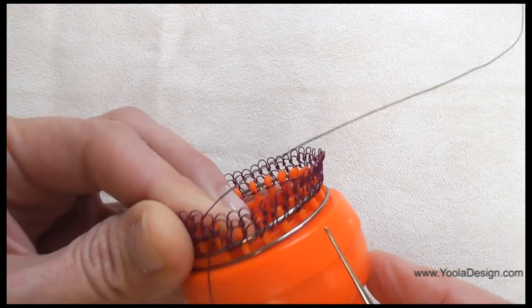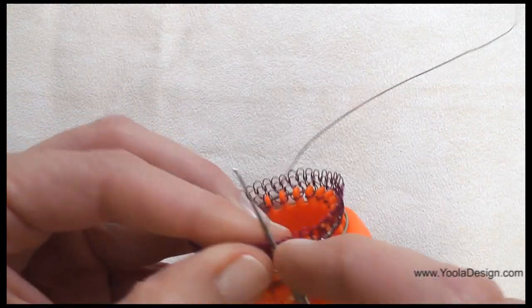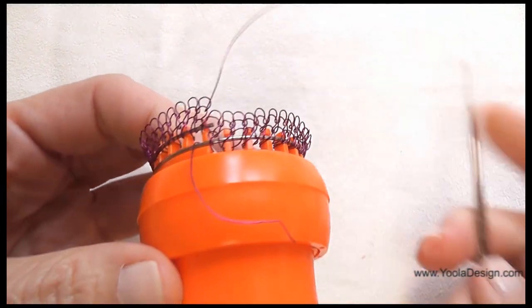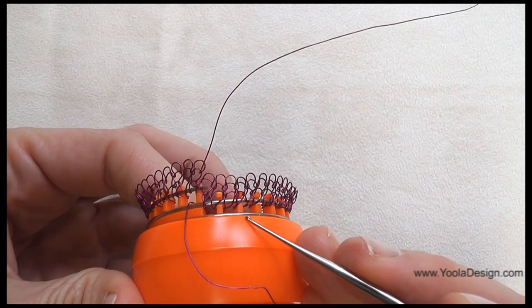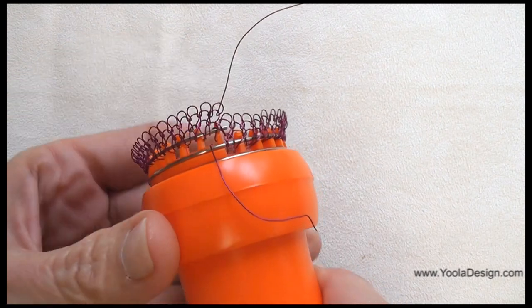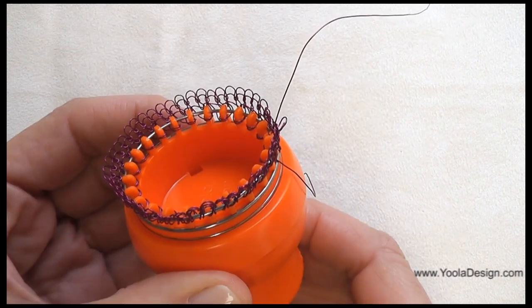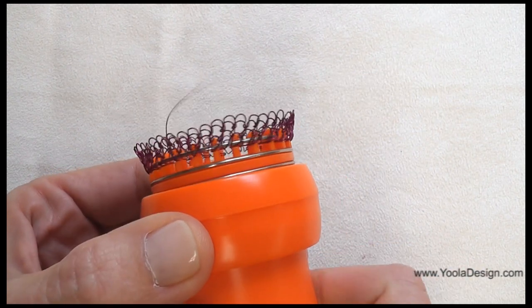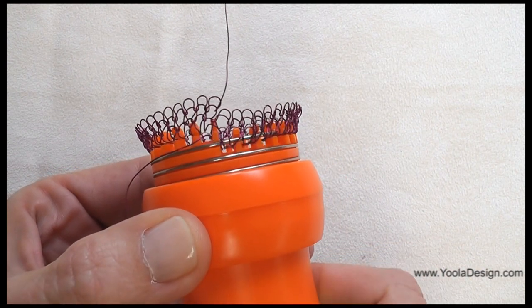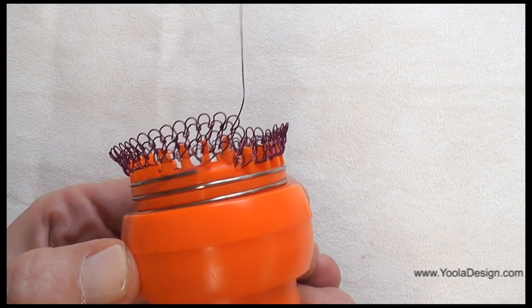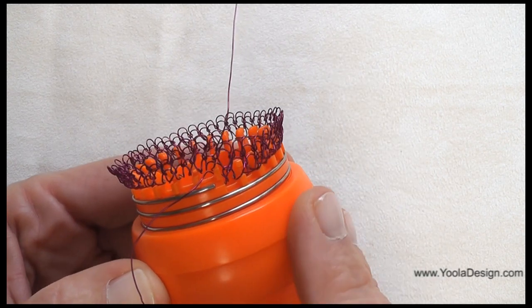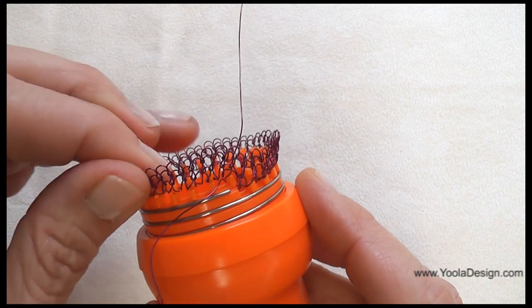I'm going to release now the knitted part from the Eula knitter. I do this by rotating the ring. I rotate it a whole circle until I see the spring is out like here, and now I can take off the knitted part.